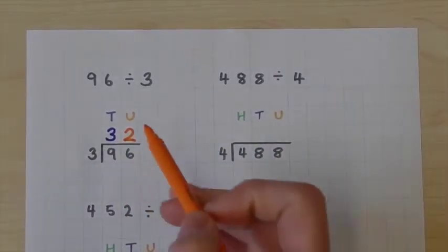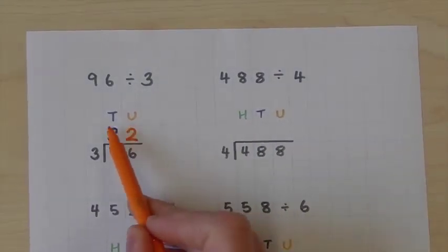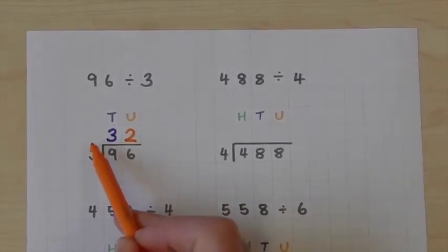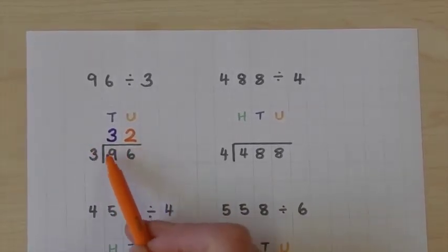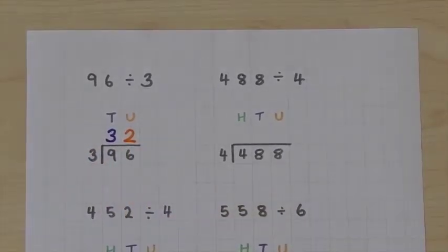We can check our answer by multiplying 32 by 3, which does give us 96.